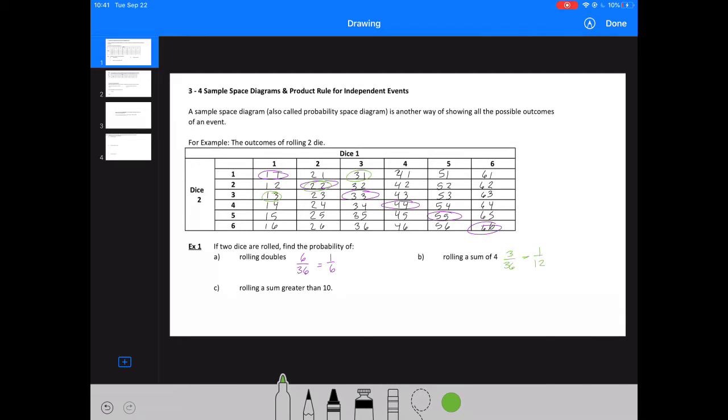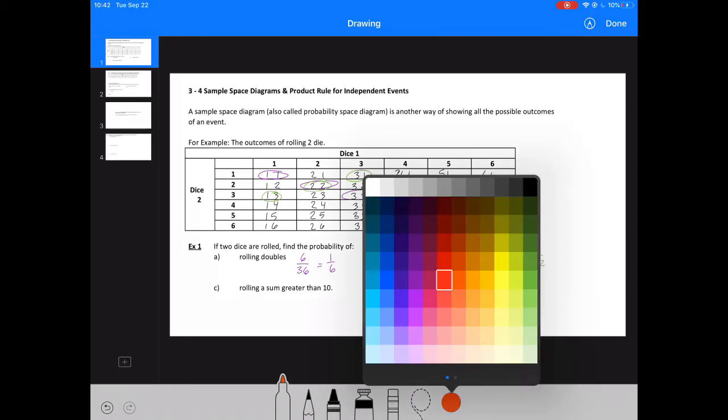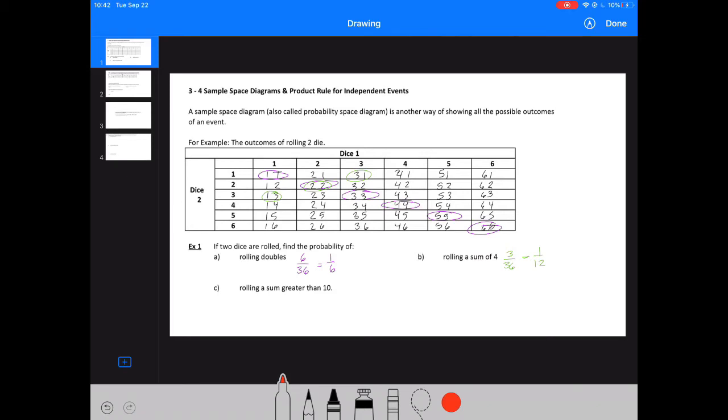My last one is rolling a sum greater than 10. So let's do those in red. So where am I greater than 10? Here's sort of the diagonal row that's going to equal 10. So the only way for me to score more than 10 would be 1, 2, 3. So to roll a sum greater than 10, I would have 3 out of 36 or 1 twelfth again. So it's nice because you can count your outcomes and then determine your probabilities from there.